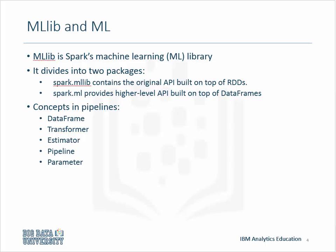Spark MLLib contains the original API built on top of RDDs. Spark ML provides a high level API built on top of data frames. Spark ML standardizes APIs for machine learning algorithms to make it easier to combine multiple algorithms into a single pipeline or workflow. Using Spark ML is recommended because with data frames, the API is more versatile, flexible, and faster. So we will concentrate on ML in this lesson.